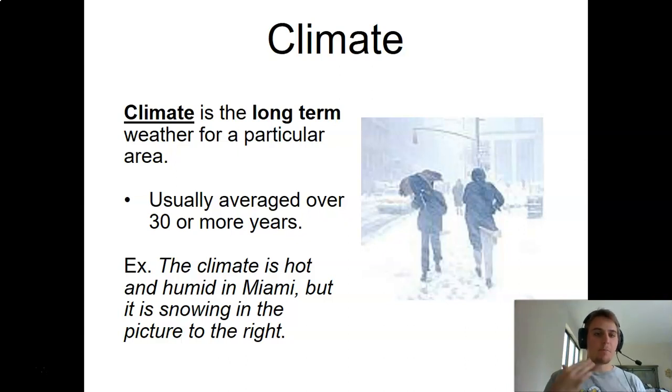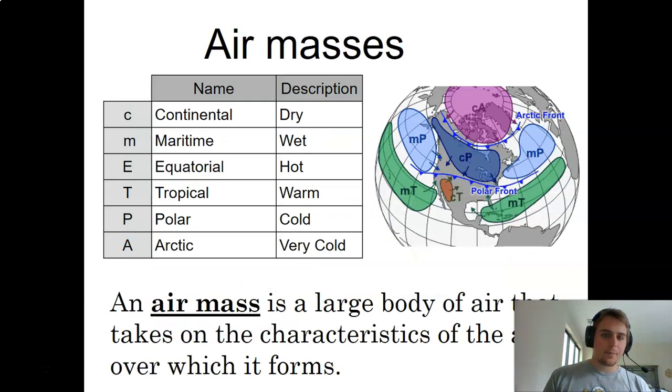Climate is much more about the patterns and the trends of weather data, whereas just weather is at this time, in this place, what does it look like outside. This is a little bit different. As an example, the climate is hot and humid in Miami, but in the picture on the right, it's snowing. The weather being one thing or another does not mean that the climate has to adhere to that weather. They are two different things, but they are related.